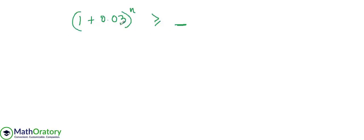So again, if I apply the binomial on this side, what you have is 1 plus n into 0.03 plus nC2 into 0.03 whole square, must be greater than or equal to the same thing.